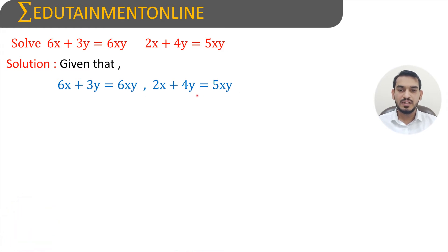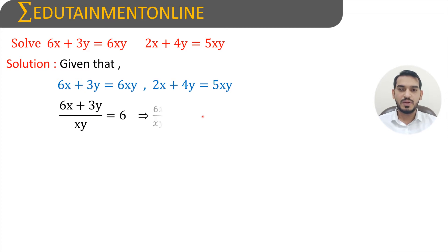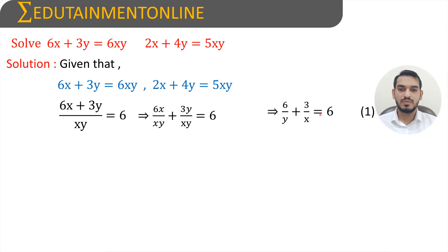The first step is to transpose xy to the left-hand side. Therefore the first equation will become (6x plus 3y) divided by xy equals 6. Now splitting the numerator into two terms: 6x/xy plus 3y/xy. We can cancel x and x in the first term, and y and y in the second term, giving us 6/y plus 3/x equals 6, which is equation number 1.